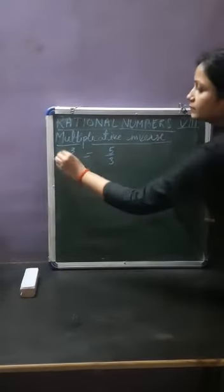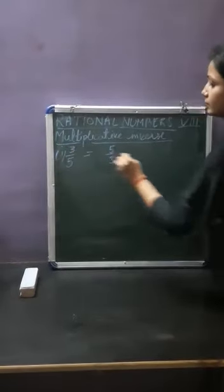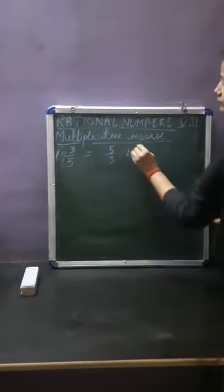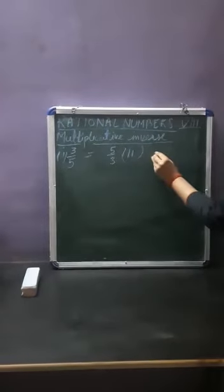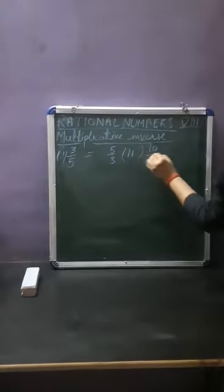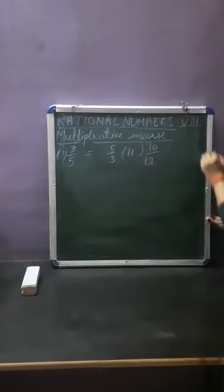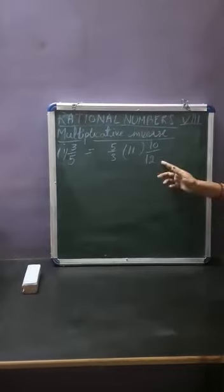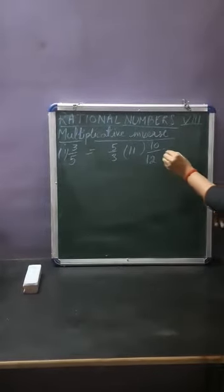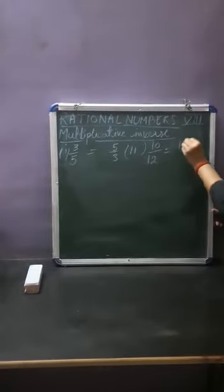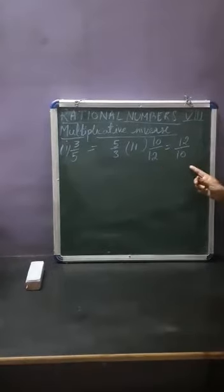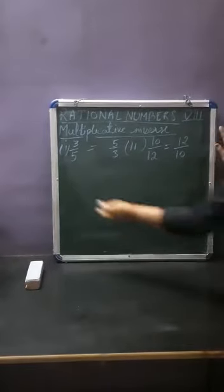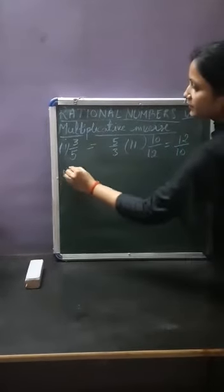Second example: if I am taking 10 upon 12, the multiplicative inverse of this number will be 12 upon 10. It is called the reciprocal.